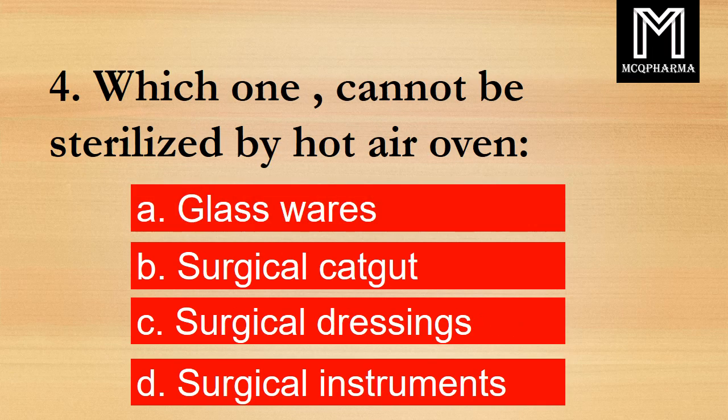Question number 4. Which one cannot be sterilized by hot air oven? Option A: Glass wires. B: Surgical cat guard. C: Surgical dressings. D: Surgical instruments. Correct answer: Option C, Surgical dressings.